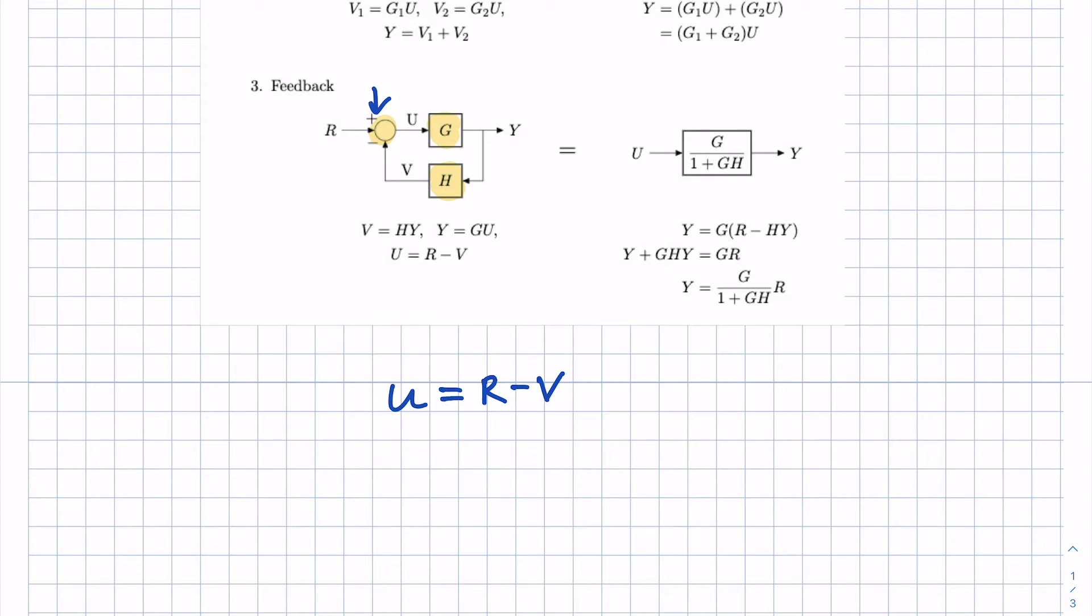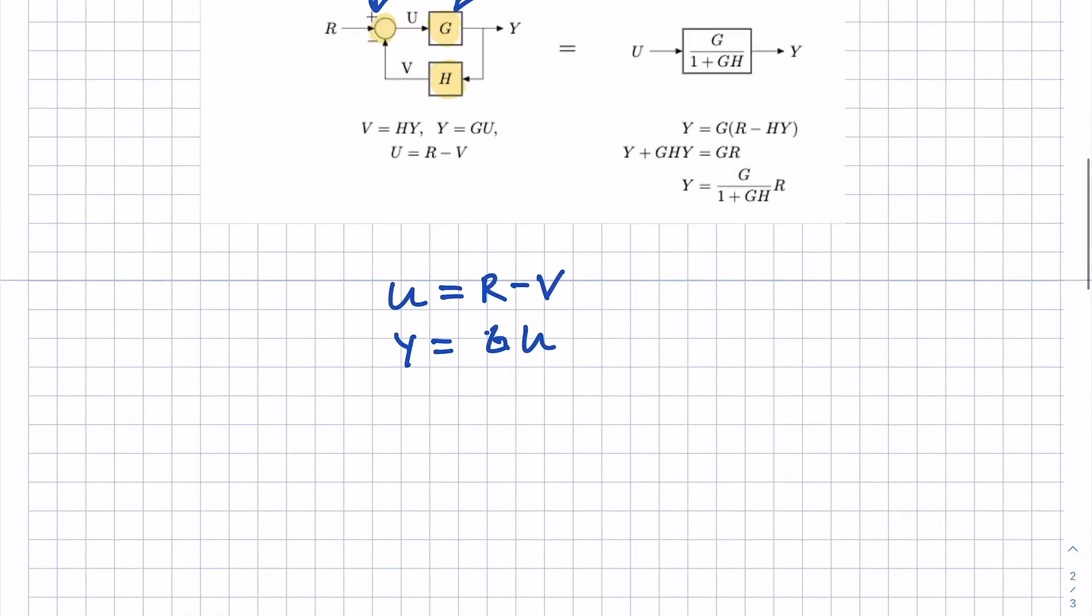Then let's consider this transfer function G. The output is Y, the input is U, so that would be G times U. And then finally, for the feedback transfer function, the output is V and the input is Y.